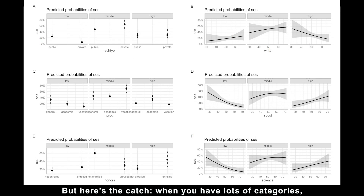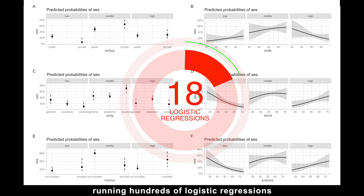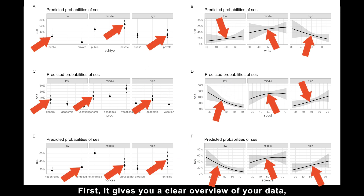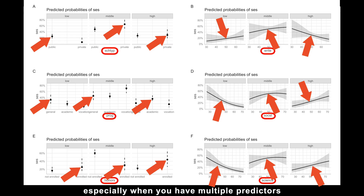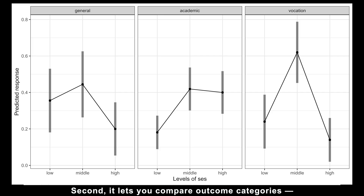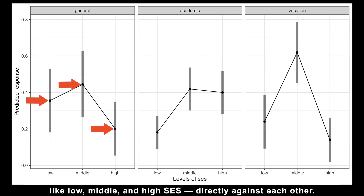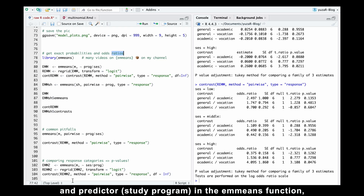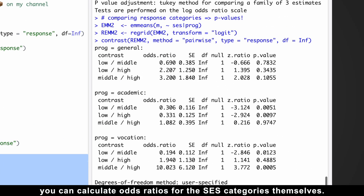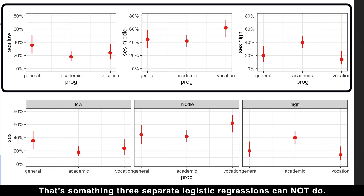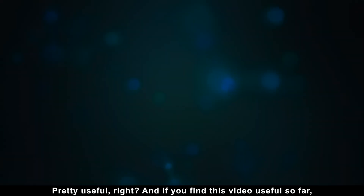But here is the catch. When you have lots of categories, running hundreds of logistic regressions can quickly become overwhelming and chaotic. That's where the multinomial model shines with three key advantages. First, it gives you a clear overview of your data, especially with multiple predictors in a multivariable multinomial model. Second, it lets you compare outcome categories like low, middle, and high socioeconomic status directly against each other. For example, by swapping the outcome and predictor in the emmeans function, you can calculate odds ratios for the socioeconomic status categories themselves — something three separate logistic regressions cannot do.